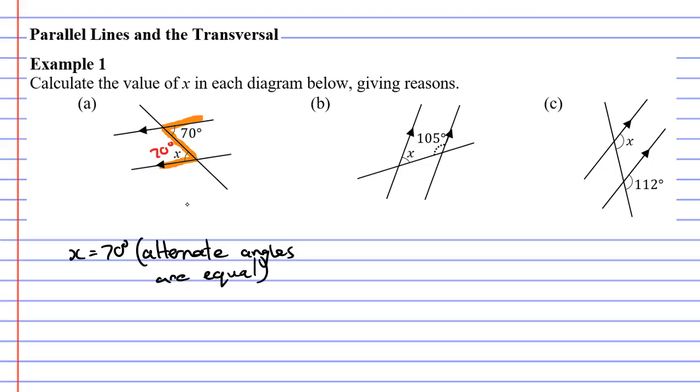Let's now move on to question b. Grabbing our highlighter, we're going to mark the lines around the 105 degree angle and the lines around the x. As we extend these lines, we get a c shape, meaning the angles are co-interior.